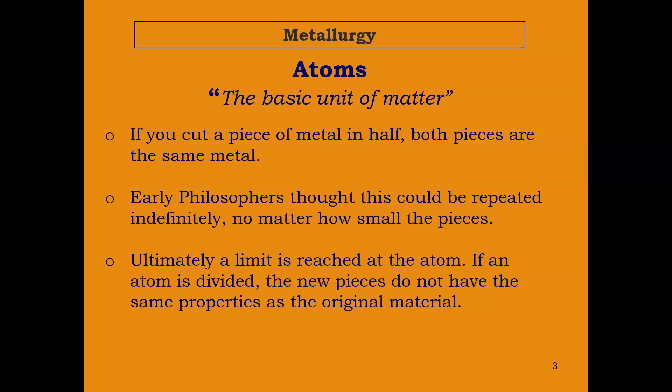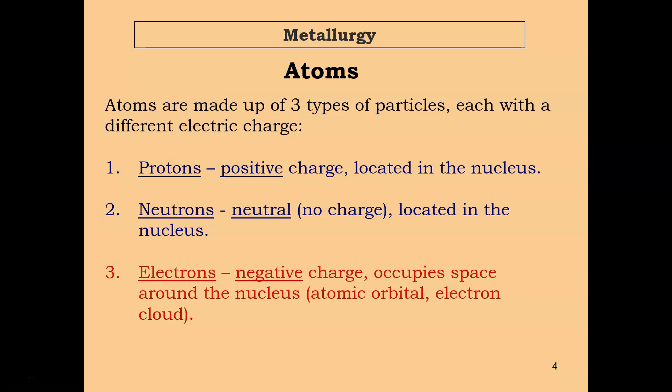Atoms are made up of three types of particles, each with a different electrical charge. Protons have a positive charge and they're located in the nucleus. Neutrons are neutral and have no charge, also located in the nucleus with the protons. Electrons have a negative charge and occupy space around the nucleus, also called an atomic orbital. With metals, there's an electron cloud.